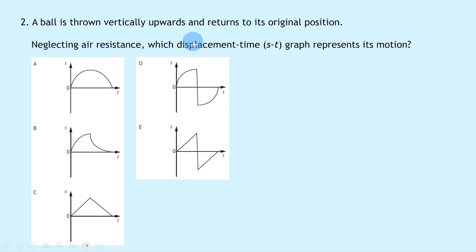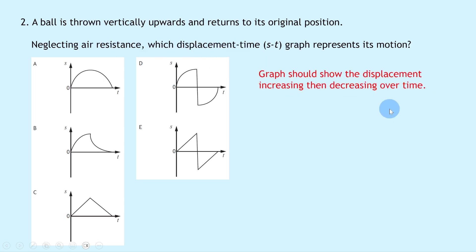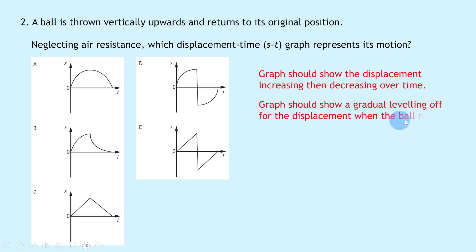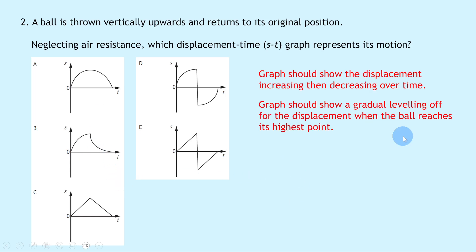Question 2 says a ball is thrown vertically upwards and returns to its original position. Neglecting air resistance, which displacement-time graph represents its motion? The graph should show displacement increasing then decreasing, with a gradual levelling off when the ball reaches its highest point. Graphs B and C don't show any levelling off, so the answer is the parabola shape, which is option A.